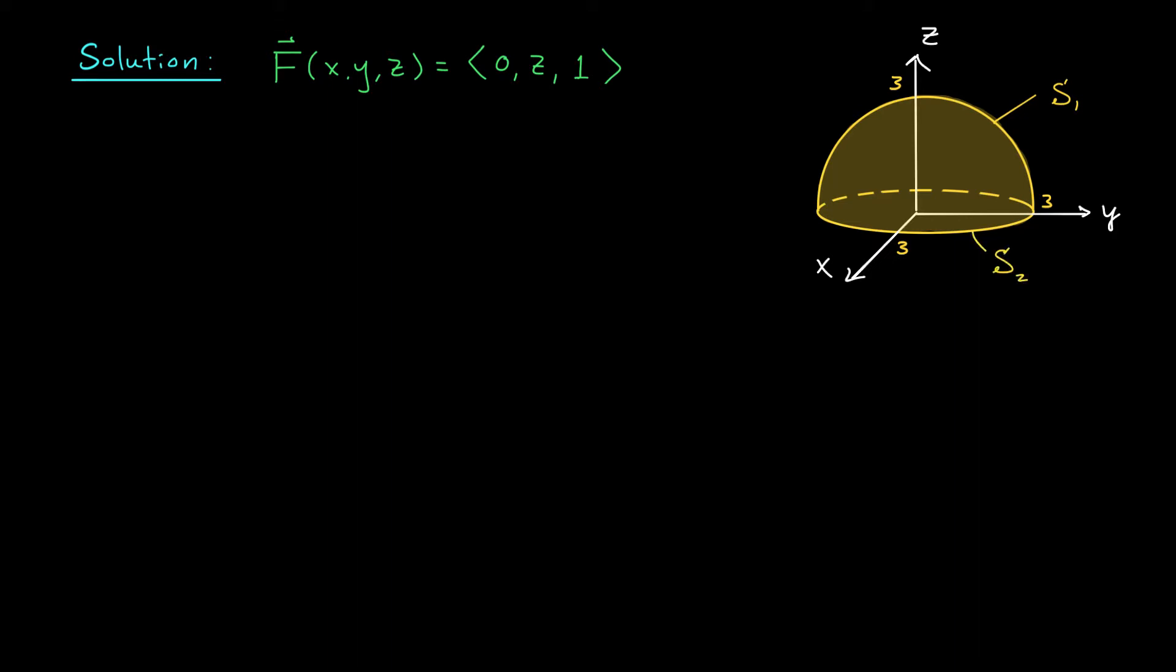We are trying to integrate the vector field F over this surface S. But since I've broken up S into two pieces, we could integrate over each piece separately. We could say that the surface integral of F over S is equal to the surface integral of F over S₁ plus the surface integral of F over S₂. This makes sense. If we're thinking of F like a fluid flow, then the net rate of flow through our surface is the sum of these two surface integrals.